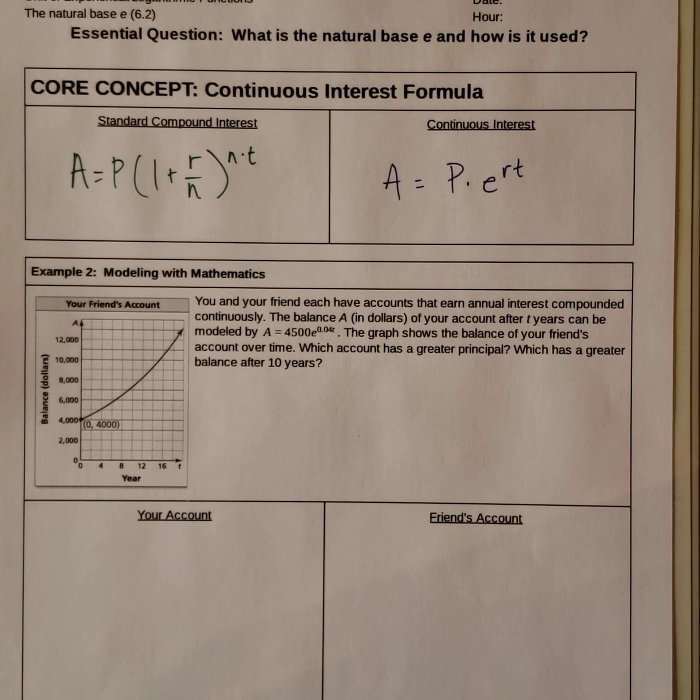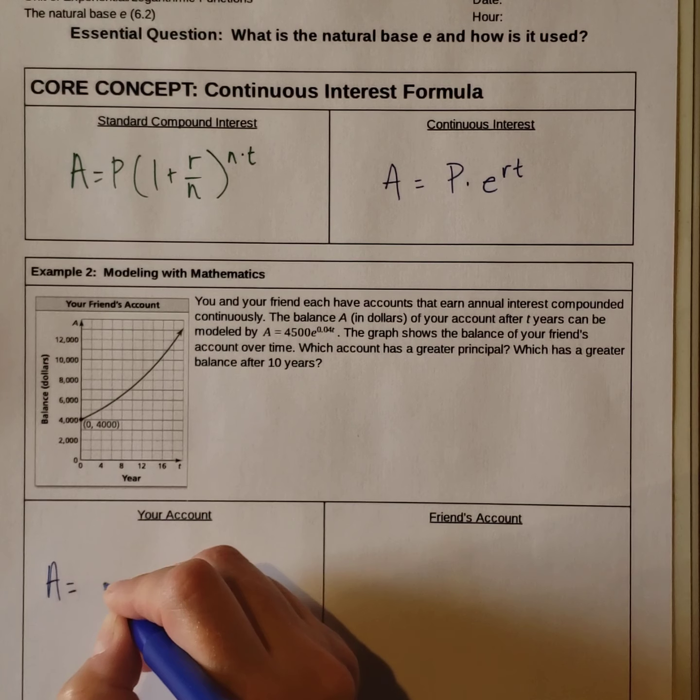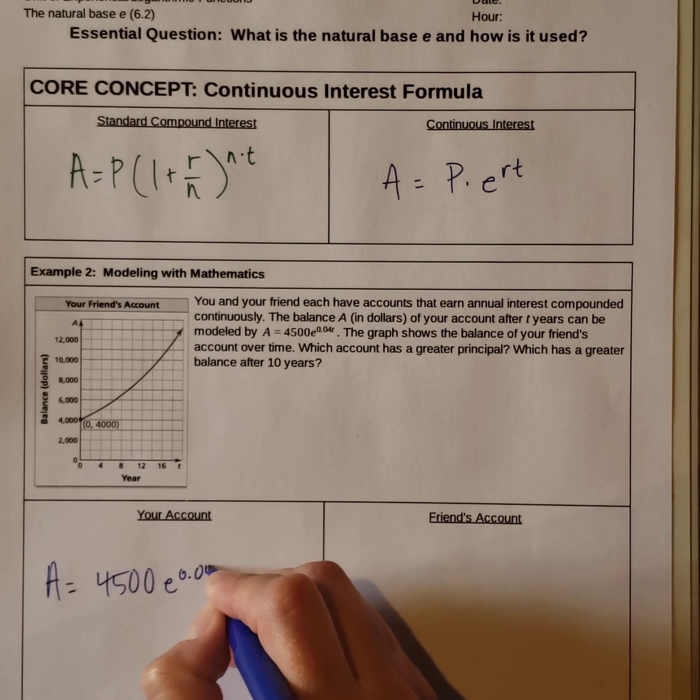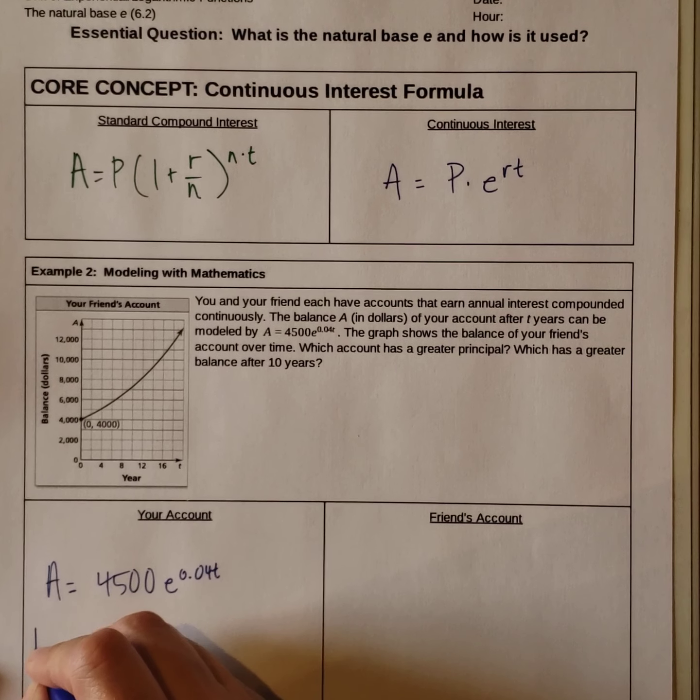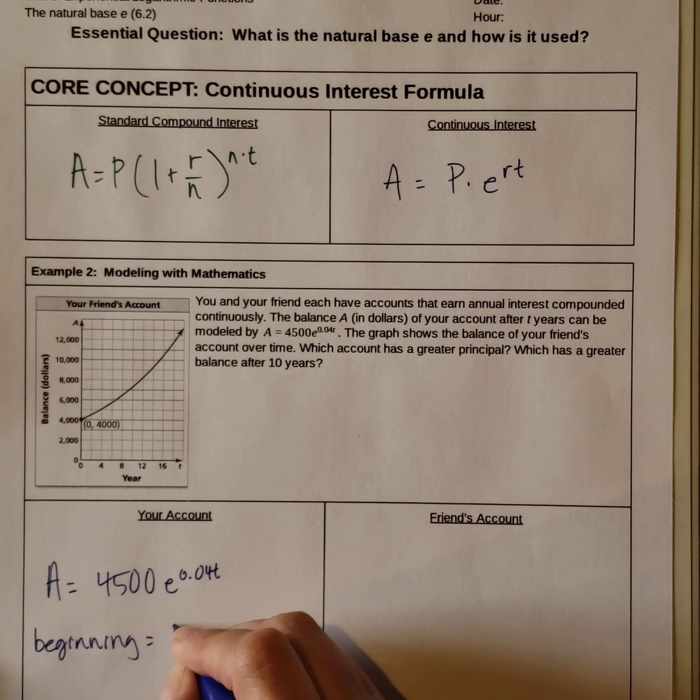So your account: A equals 4,500 times e raised to the 0.04t. Your beginning amount is the 4,500.